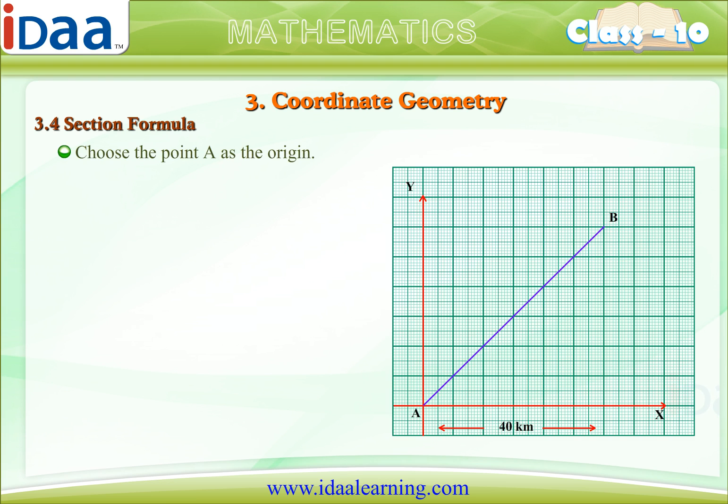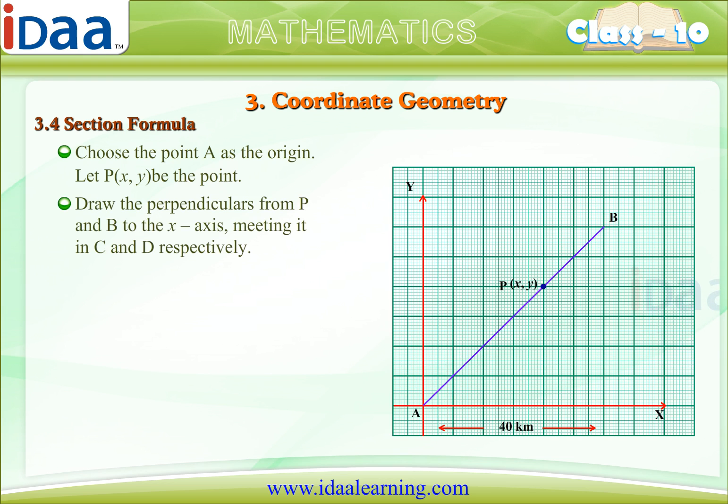Choose the point A as the origin. Let P(x,y) be the point. Draw the perpendiculars from P and B to the x-axis meeting it in C and D respectively.